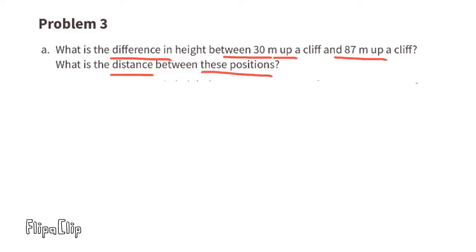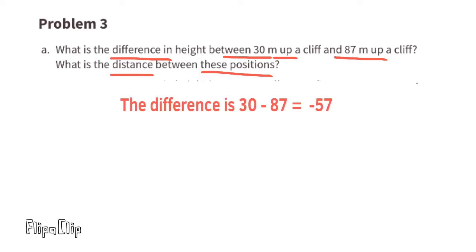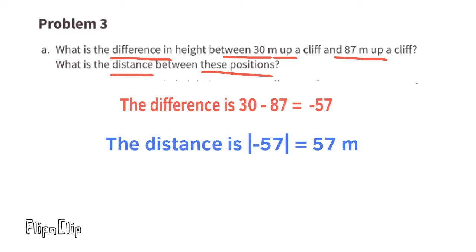Problem number three, part a: what is the difference in height between 30 meters up a cliff and 87 meters up a cliff, and what is the distance between these positions? The difference in height is negative 57 meters, because 30 minus 87 equals negative 57.